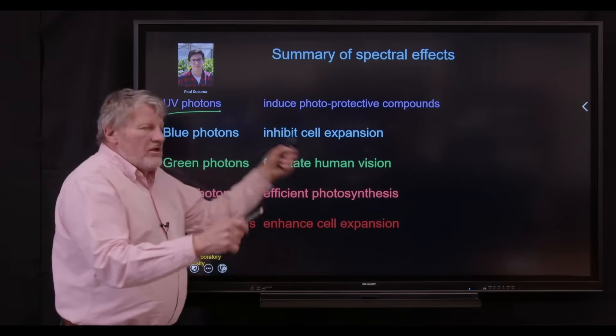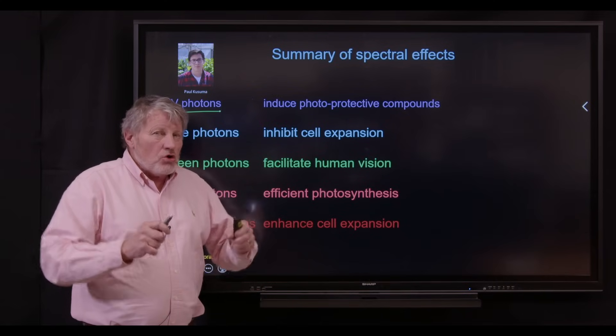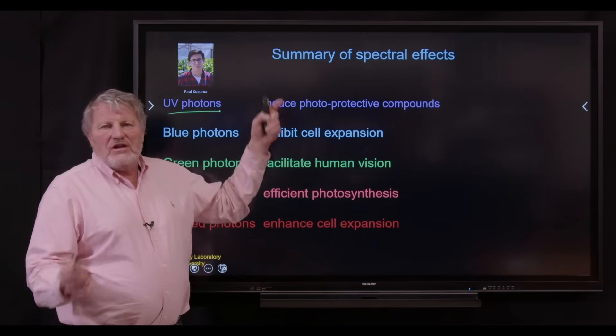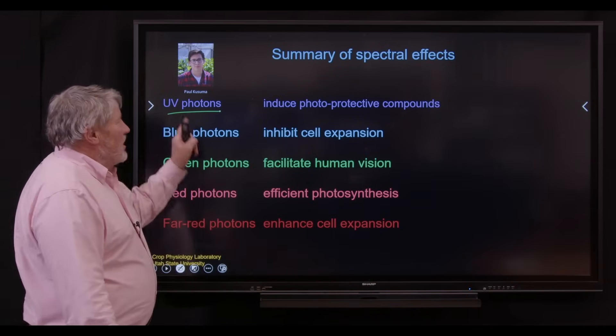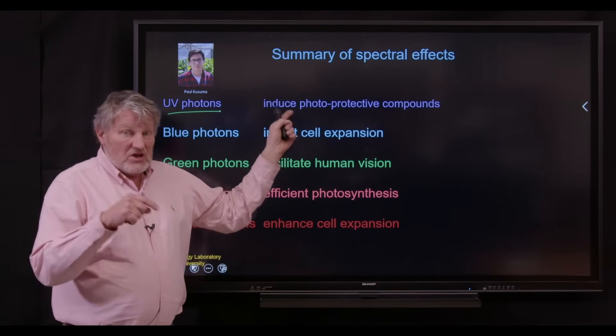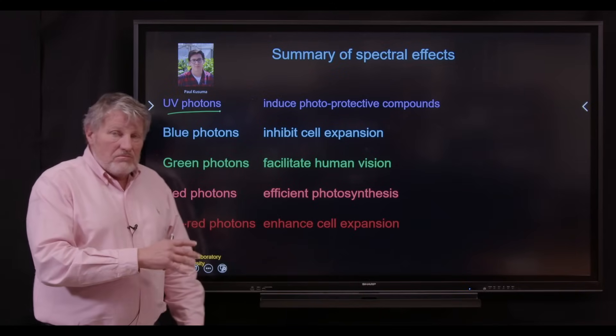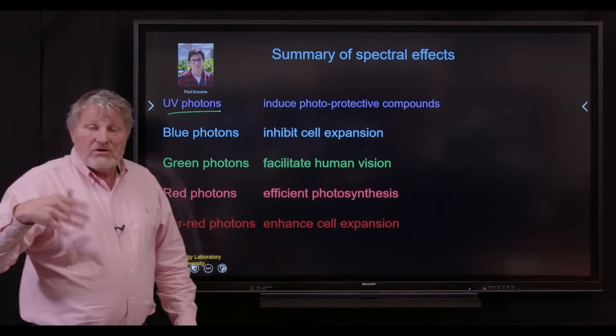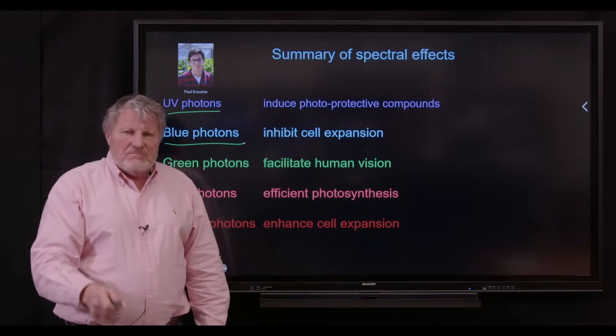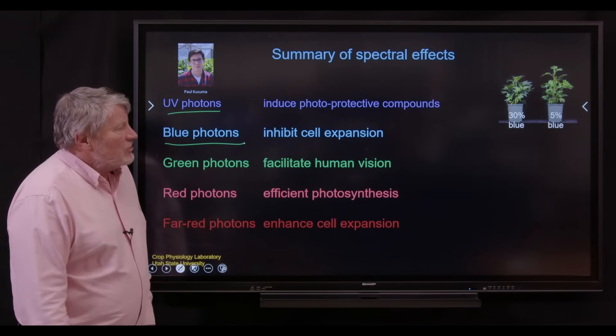UV induces photoprotective pigments in plants, and some of those photoprotective pigments could be cannabinoids because they absorb UV light. UV light turns green lettuce red. That's anthocyanin. I will say that we don't have any evidence from multiple studies in this lab that more UV can trigger cannabinoid synthesis, even though people think that it does. And our results are now consistent with other labs on that. Blue inhibits cell expansion. This is a, if you want to keep plants small and short, you can do it with blue. And I think I have a picture. Here's cannabis, 30% blue, 5% blue.